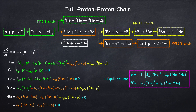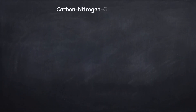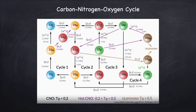Now let's move on to the other mechanism for fusing hydrogen, which is called the CNO cycle, which stands for carbon, nitrogen, and oxygen cycle. The basic idea here is that various carbon, nitrogen, and oxygen isotopes act as catalysts for hydrogen fusion. And as you can see on this diagram, the CNO cycle is made up of a number of sub-cycles.